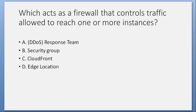Which acts as a firewall that controls traffic allowed to reach one or more instances? A. DDoS response team. B. Security Group. C. CloudFront. D. Edge location. Answer: B. Security Group.